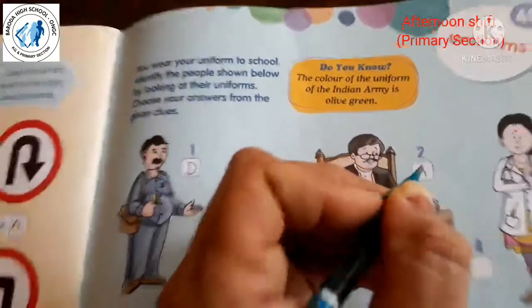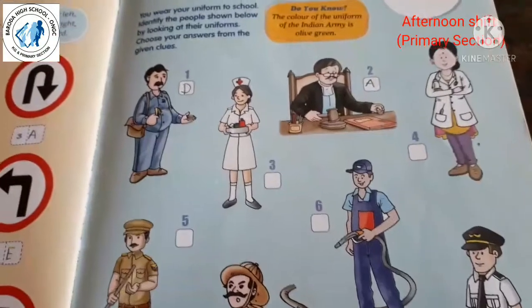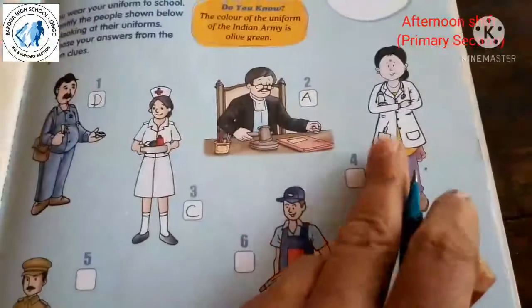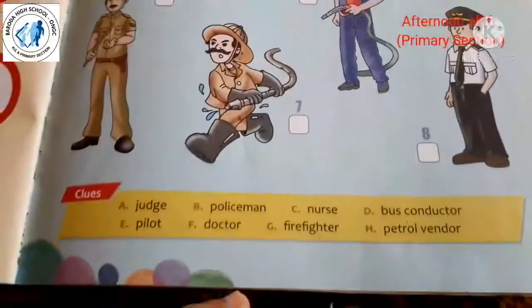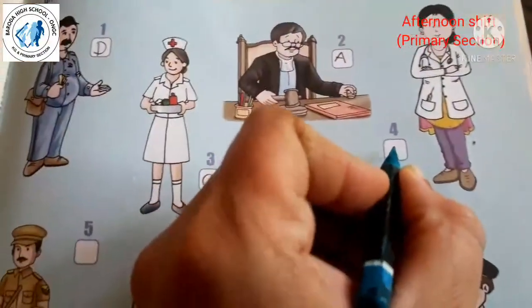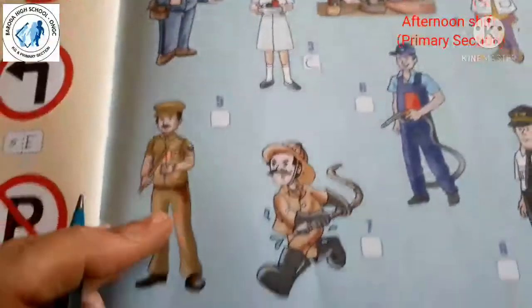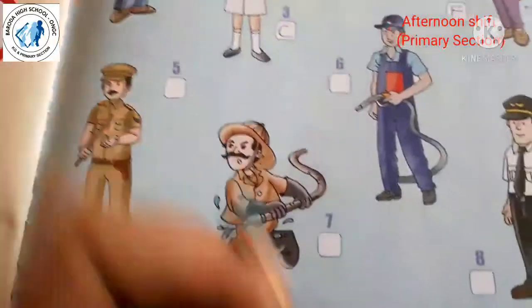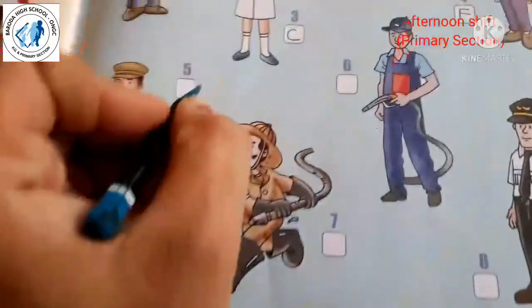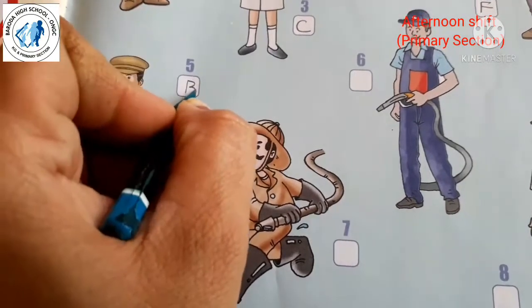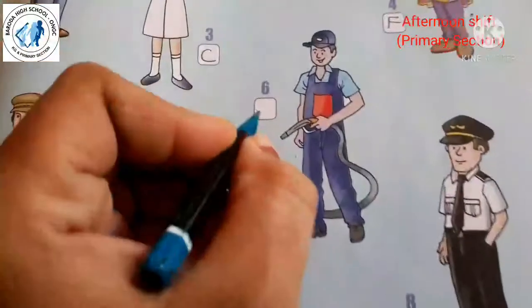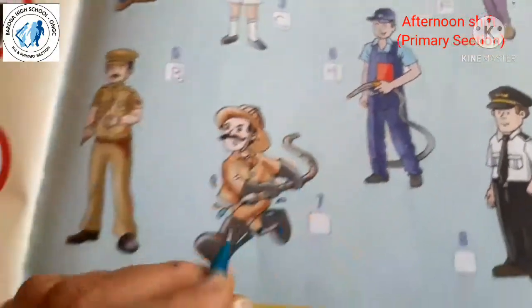The second person is a judge — the answer is A. A judge gives decisions in court. The third person is a nurse — answer is C. The fourth person is a doctor — answer is F.